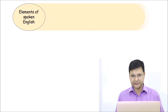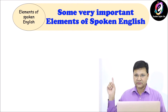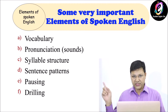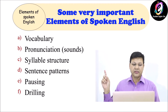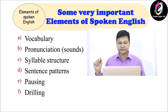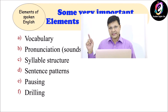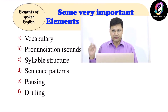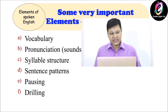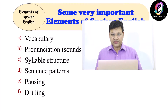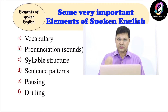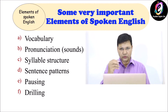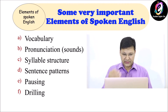Elements of spoken English. Number one: vocabulary. Number two: pronunciation and sounds. Number three: syllable structure. Number four: sentence patterns. Number five: pausing. And number six: drilling. These are the six very important elements of spoken English. One by one I will let you know something about these elements.